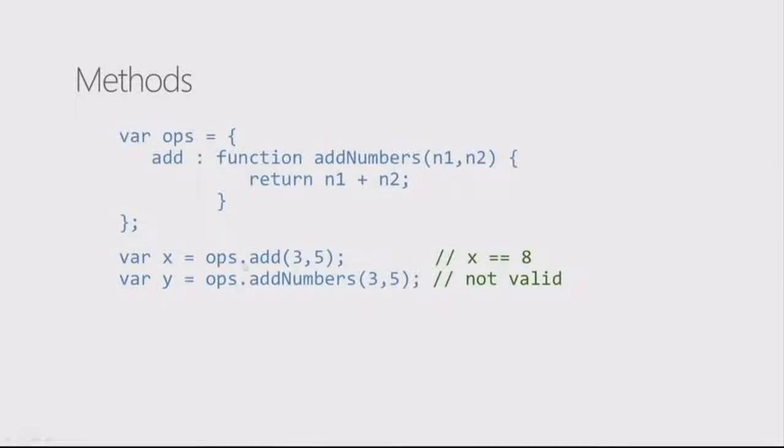Once that function becomes a member of this curly brace thingy, which we'll just call it an object for now, we'll say that object is a member of ops. The object happens to have an add method in it, and that add method is a function that takes two numbers in and returns the result of that. So down below, if I say var x equals ops dot add 3 comma 5, well, 3 and 5 get passed into here, and then they're added together. That's why we get that x equals 8. But I can't call ops dot add numbers, even though that's the name of the function, which is kind of interesting.